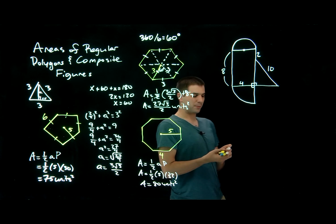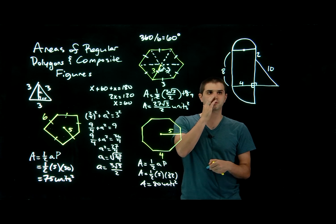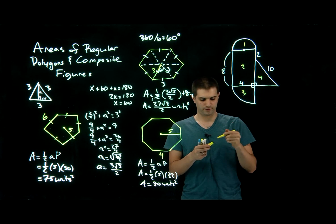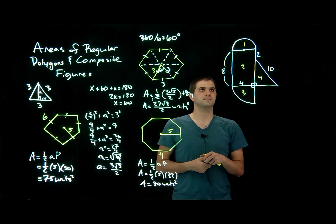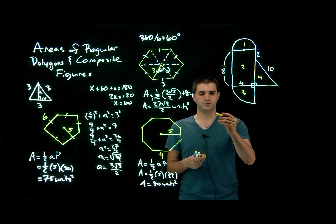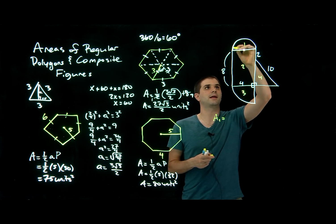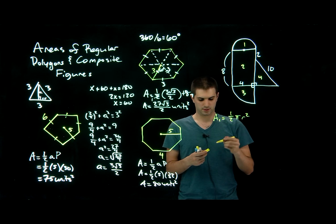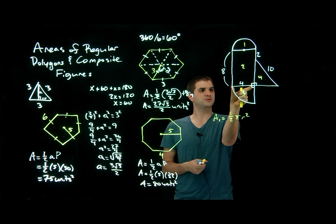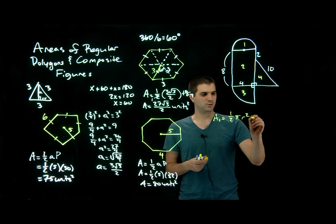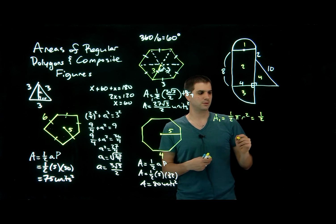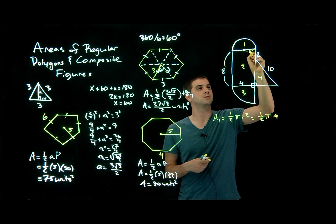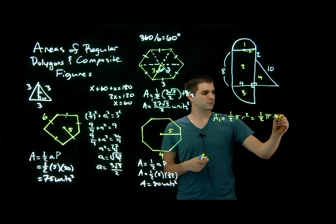Finally, we have this composite figure. We're going to figure out the area of each of the four shapes. Starting with shape 1, which looks like a semicircle: area equals one half pi r squared. If this width is 4, then r equals 2, so the area equals one half times pi times 4, which equals 2π.